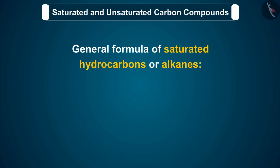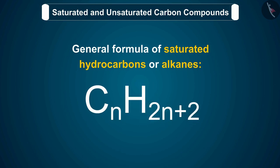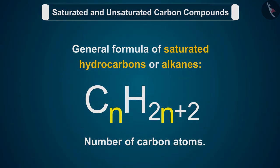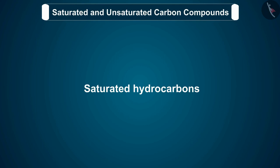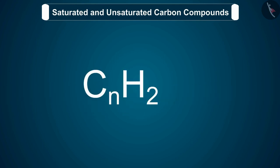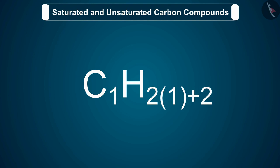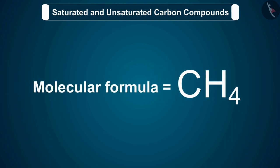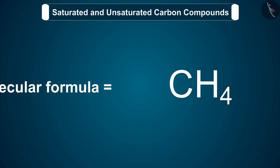The general formula of saturated hydrocarbons or alkanes is CnH2n+2, where n is the number of carbon atoms. Let's discuss saturated hydrocarbons with the help of examples. If an alkane has one carbon atom in its molecule, when n equals 1, its molecular formula according to the general formula becomes CH4, which we call methane.